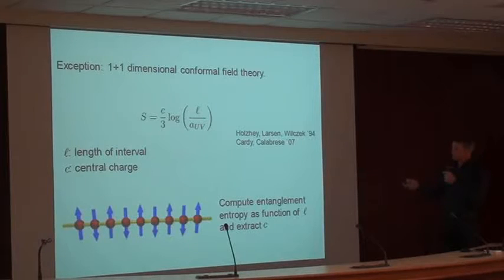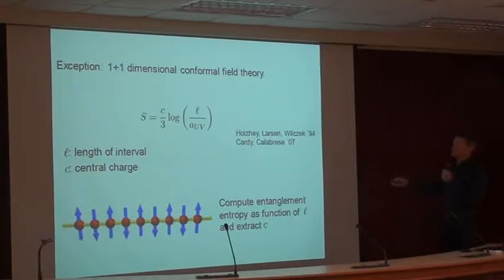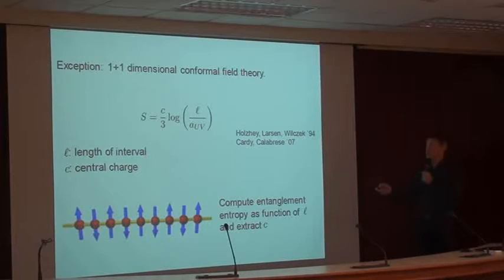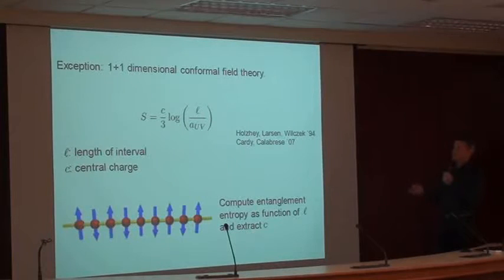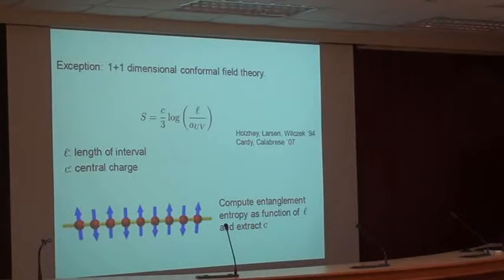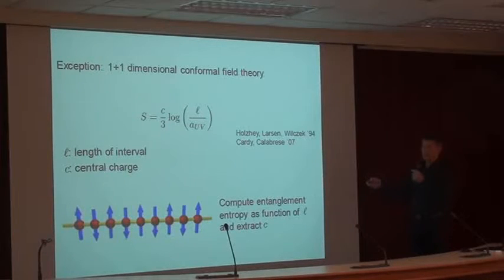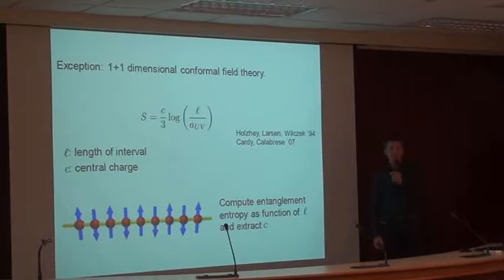Here are a few simple applications. In a 1+1 dimensional conformal field theory, there is a universal answer for entanglement entropy of an interval of length L: it's C/3 times log(L/epsilon), where C is the central charge of the CFT and epsilon is a UV cutoff. This is a great numerical way to extract central charges of fixed points. If you have a spin chain, simulate the ground state, and know that in the thermodynamic limit you should get a scale-invariant theory, you just compute entanglement entropy for finite interval sizes L, and from the slope of the log you read off the central charge.